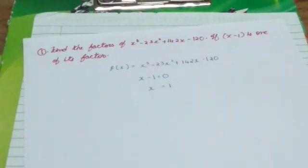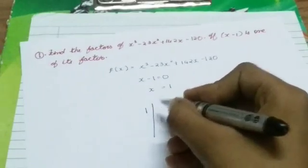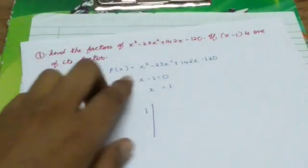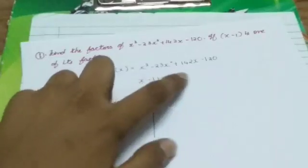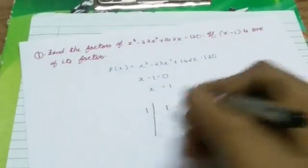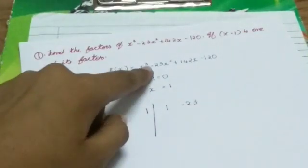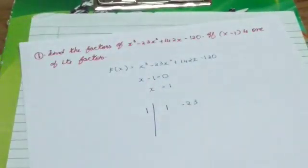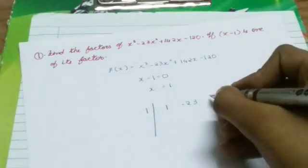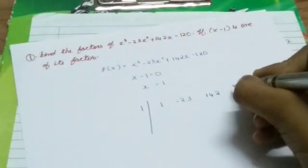By Horner's method of synthetic division, we draw a line and place 1 here, then write the coefficients of all terms: x cubed, x squared, x, and the constant term. The coefficient of x cubed is 1, the coefficient of x squared is minus 23, the coefficient of x is plus 142, and the constant term is minus 120.